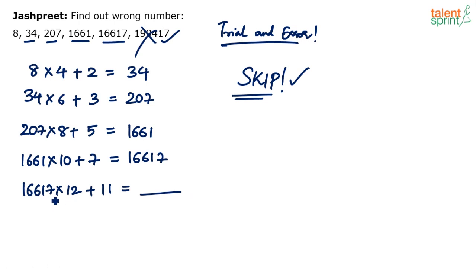I'm sure you can do the calculation yourself. 16,617 × 12 will give you 166,170 plus two times 16,617 plus 11. Even if I go by unit place calculation: 7 × 2 ends with 4, plus 1 is 5, so the answer should end with 5.